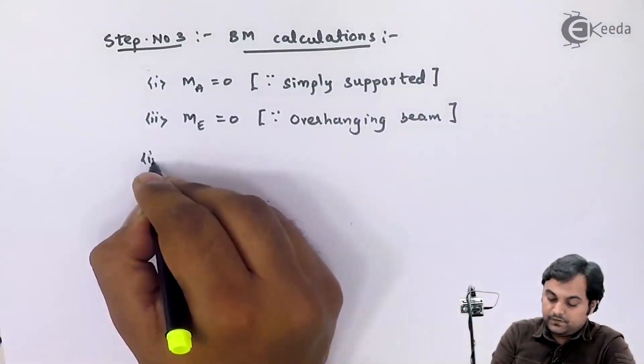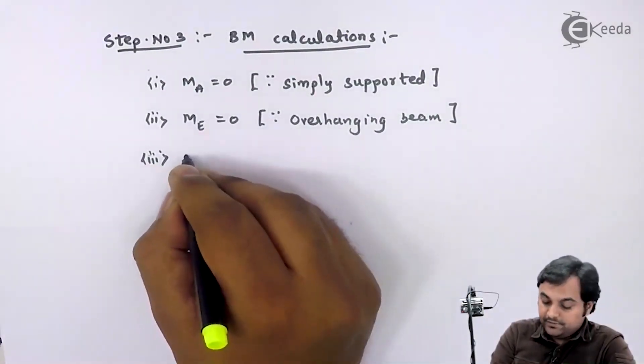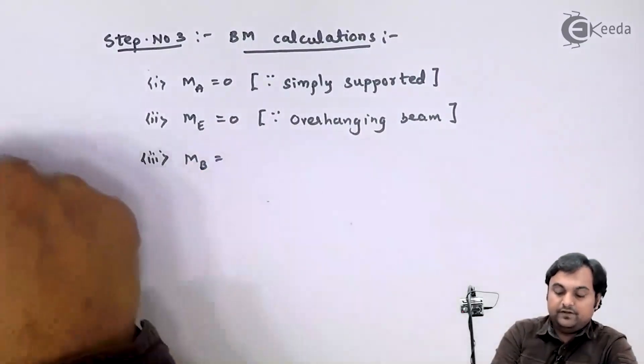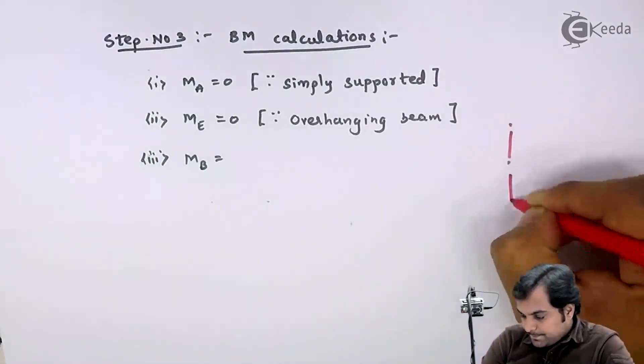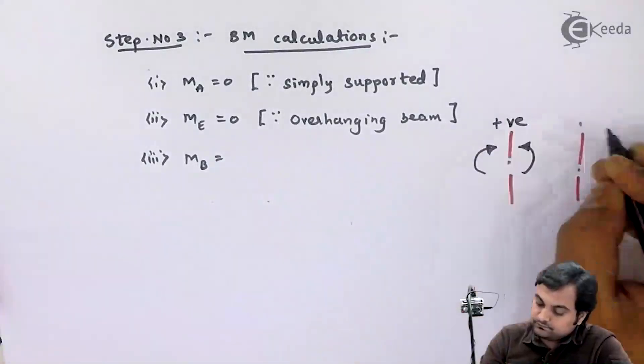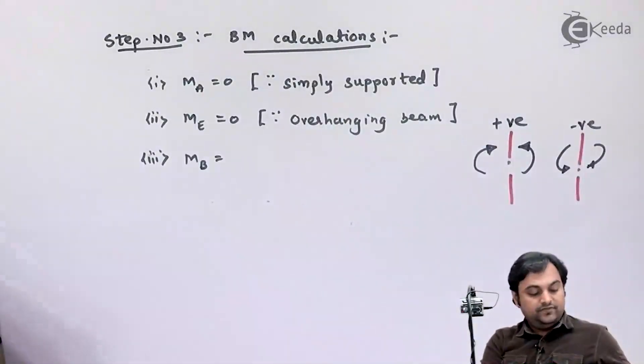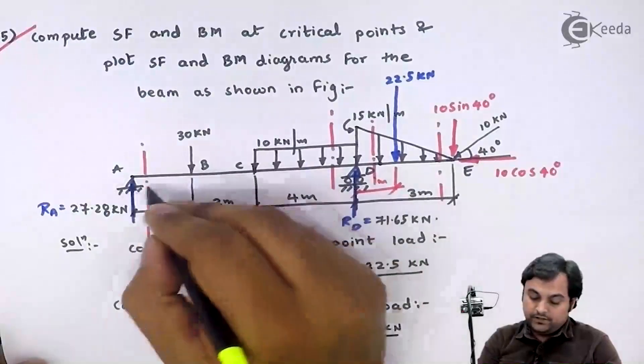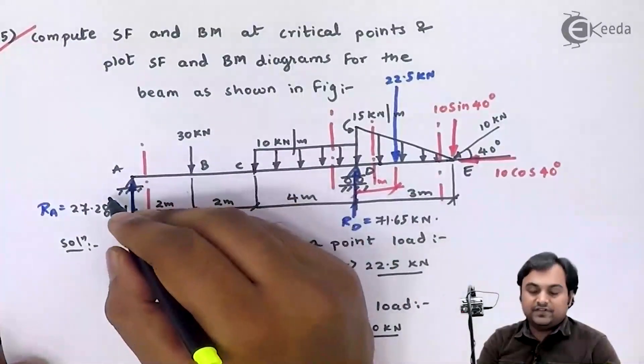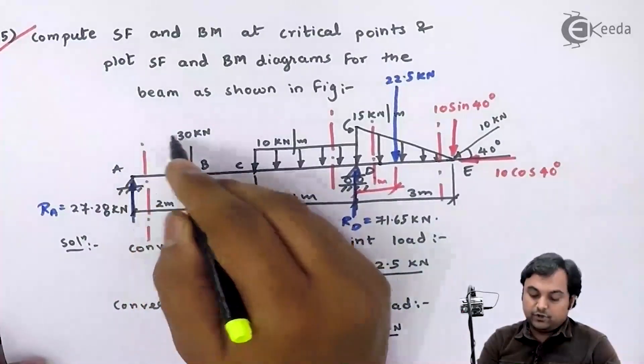Next I will be calculating moment at B and for that we should know the sign convention. If I take section at B and I look left of the section, RA will produce clockwise moment so that is positive.